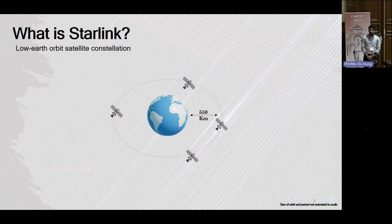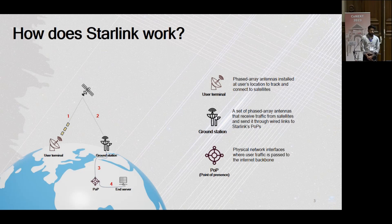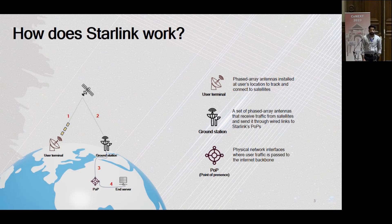This is the constellation that Starlink uses to provide broadband internet to all of its users. I'll now discuss the three main components that Starlink uses to provide internet to its users. The first one is a user terminal — the piece of hardware that gets shipped to you when you first order Starlink. It contains a bunch of phased array antennas installed at a user's location, and these antennas track satellites and then talk to them. Then we have ground stations, which are essentially just bigger versions of these user terminals, installed on the ground by Starlink themselves.